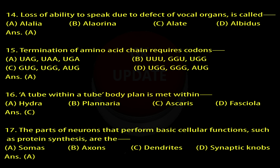Question 15: Termination of amino acid chain requires codons. A. UAG, UAA, UGA. B. UUU, GGU, UG. C. GUG, UG. D. OGGUG. Answer: A.